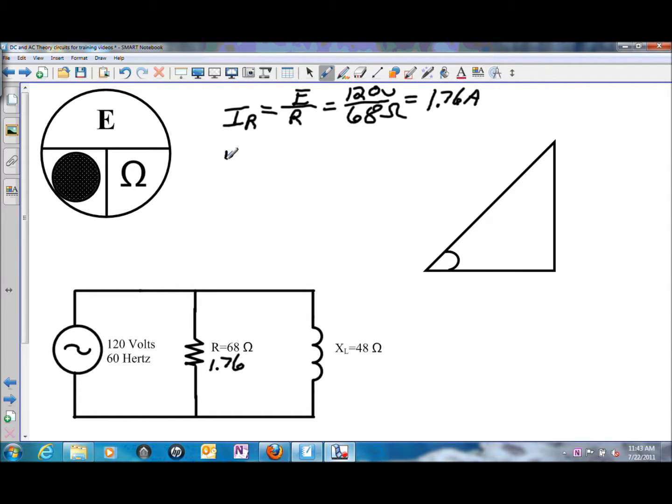Calculating the current flow through the inductor, IL, will be the source voltage divided by the value of inductive reactance, or 120 volts divided by 48 ohms of inductive reactance. That will give us a current flow of 2.5 amps through the inductor.